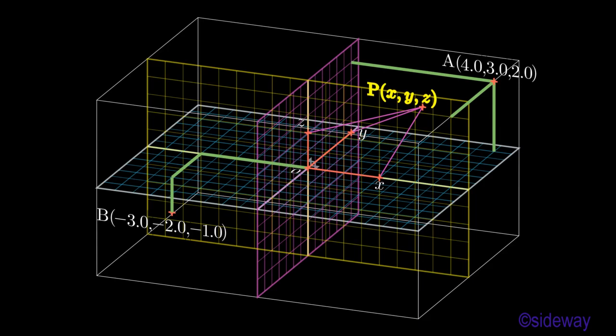Therefore, each point in the space corresponds to a real number triple, with respect to the position of the point relative to the origin along axes accordingly. In other words, each point is assigned a unique coordinate triple, and the coordinate triple of a unique point is given a unique real number triple.